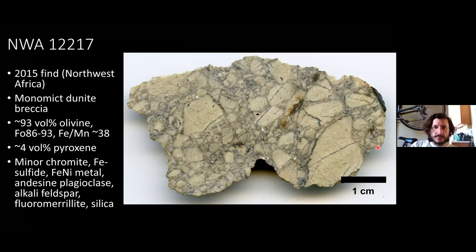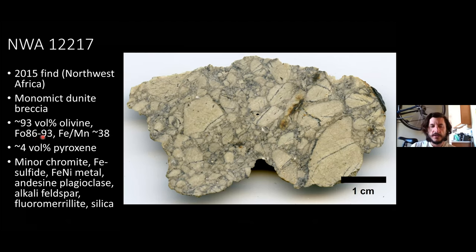Now I want to get into these new meteorite finds. This is the first one we worked on — NWA 12217, a 2015 find. It's a monomict dunite breccia, 93 volume percent olivine. In contrast to those primitive achondrites discussed, this is really high forsterite content — magnesium-rich olivine Fo86–93. The Fe/Mn ratio is around 38, lower than the angrites in particular, and similar to the range of HED meteorites. Only around 4 volume percent pyroxene, with minor phases including chromite, iron sulfide, iron-nickel metal, andesine plagioclase, and minor alkali feldspar, fluorapatite, and even free silica.